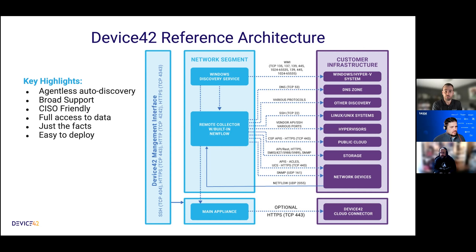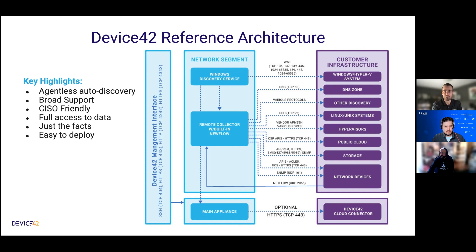Device42 has remote collectors that can be strategically deployed — typically one per data center — as a way to scale out. They can also be deployed in hardened network sections or secure zones where you don't want to open firewall rules. You deploy a remote collector locally within that network, it runs discovery there, and sends data to the main appliance on a single encrypted port.